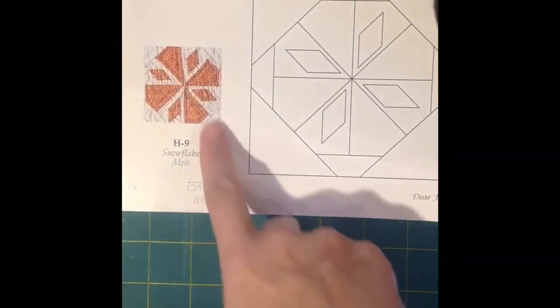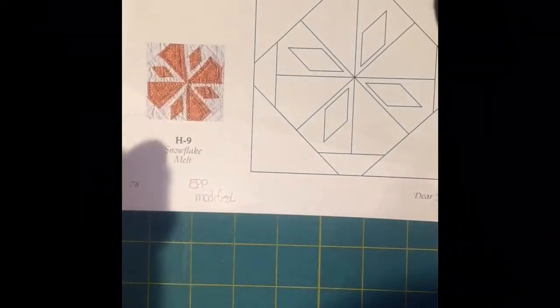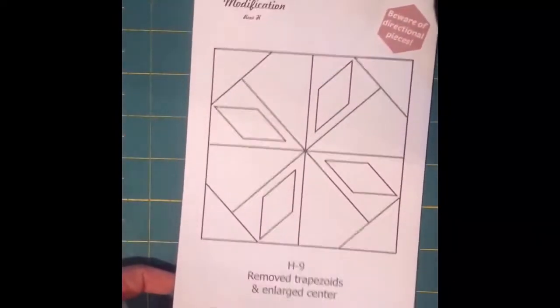Okay, so my next block to organize is my H9 block, and again I've got it labeled as the EPP modified block.